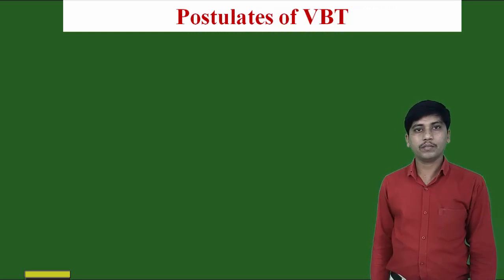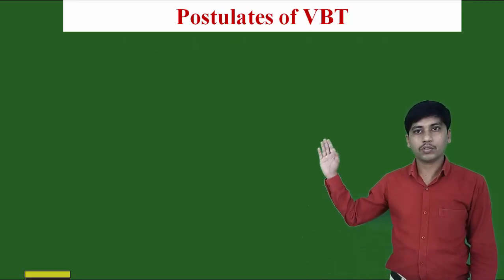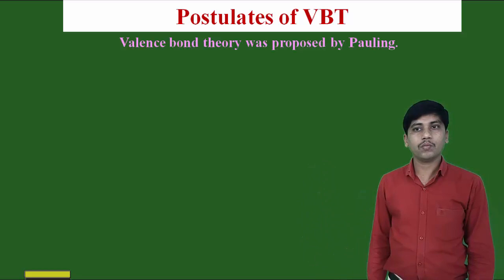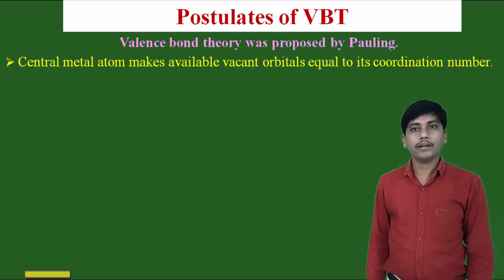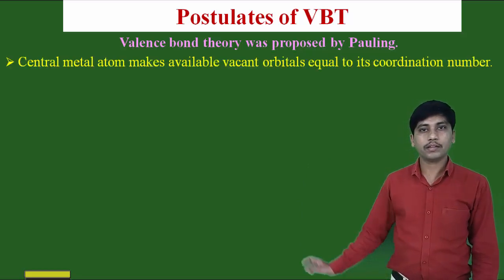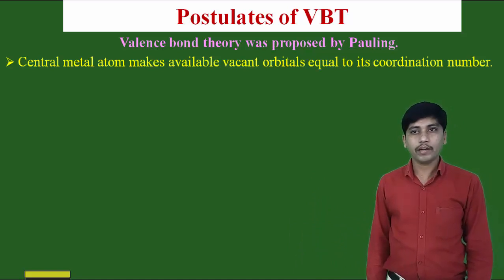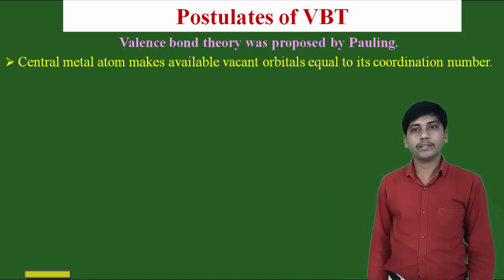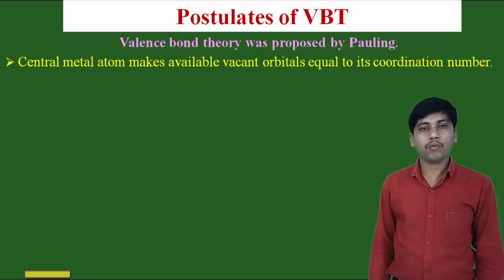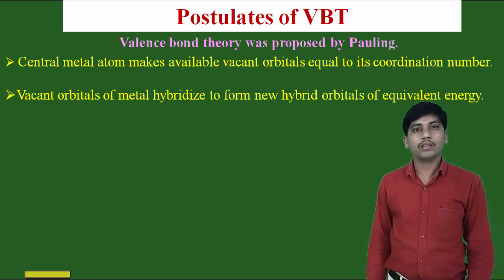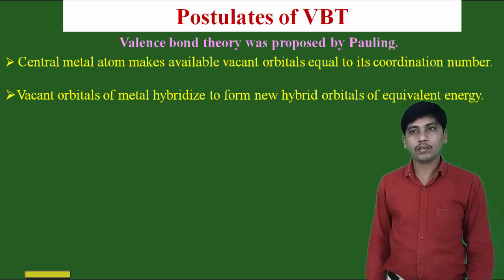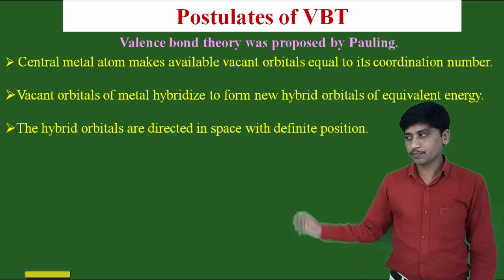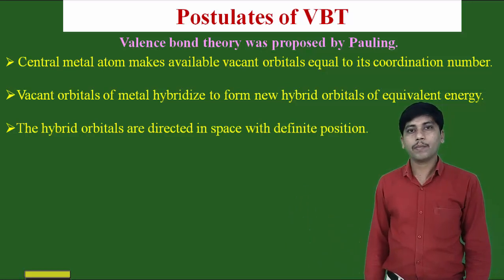The first postulate of Valence Bond Theory — which was proposed by Pauling — states that the central metal atom makes available vacant orbitals equal to its coordination number for the formation of bonds with the ligands. Second, the vacant orbitals of the metal atom hybridize to form new hybrid orbitals of equivalent energy. Third, the hybrid orbitals are directional in nature and have specific positions in space.